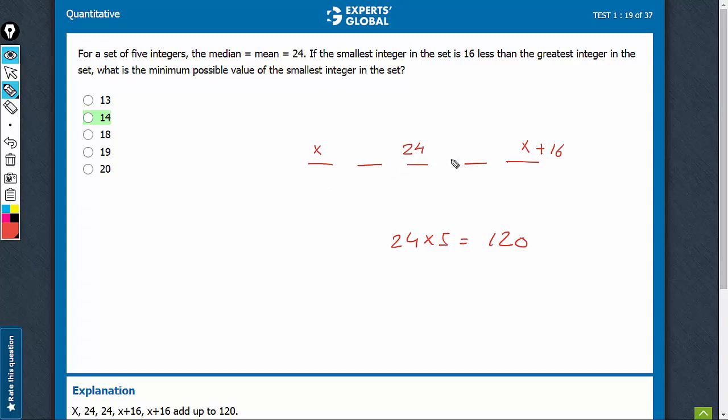So we would want to maximize the rest of the numbers. We have to see whether repetition is allowed. Yes, repetition is allowed. It's not said that the five integers are different, so we have to maximize the values of the rest.